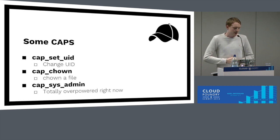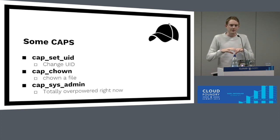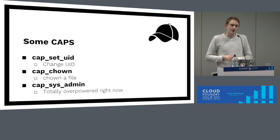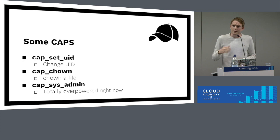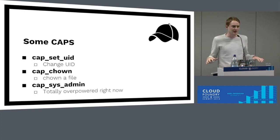It's actually possible to remove capabilities from our processes. When containerized processes are running, we can remove cap_sys_admin as well as all the other capabilities we want to. This means that if a containerized process is able to break out of the isolation, we've actually limited the amount of damage it can do because it doesn't have the capability to do anything.